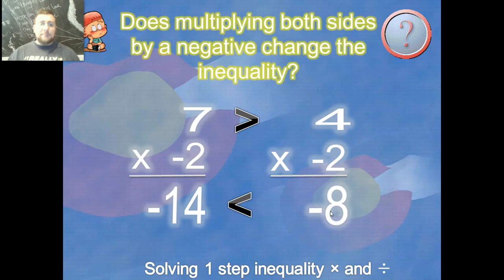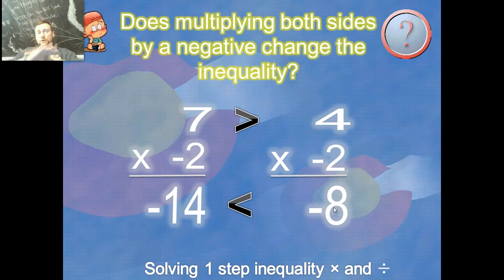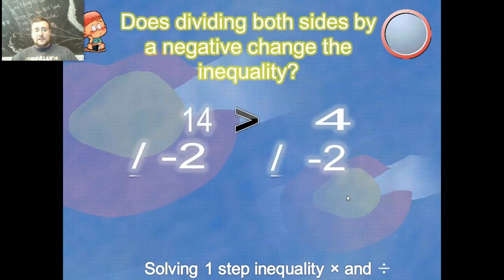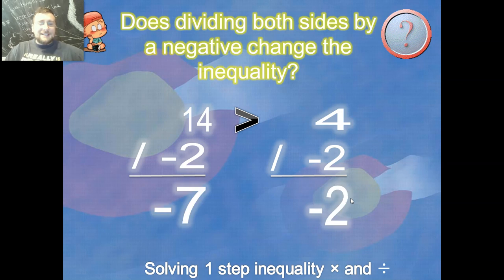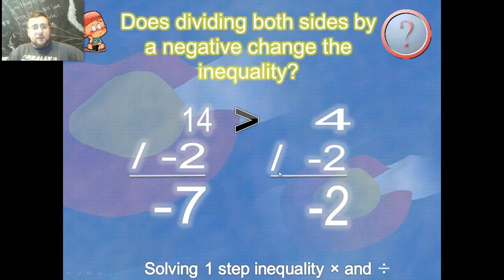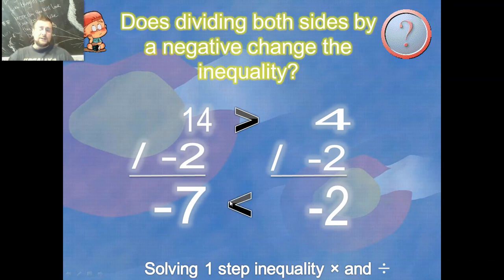It flipped because you multiplied by a negative. So the rules are: if you do the same thing to both sides it always stays the same, unless you multiply or divide by a negative. The same thing happens with division: 14 divided by negative two is negative seven, and four divided by negative two is negative two.